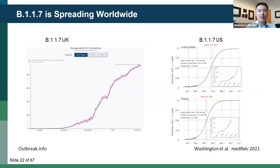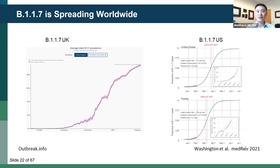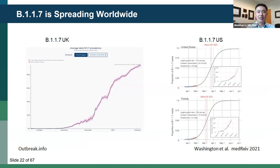B117 now represents nearly all infections in the UK. On the right, mathematical modeling of transmission and spread in the US estimates it may lead to half of all US infections by end of March or early April, and may eventually become the dominant species in the US as well.